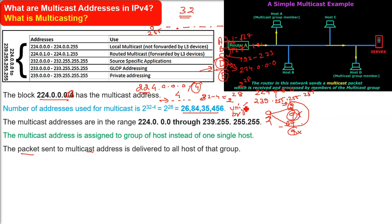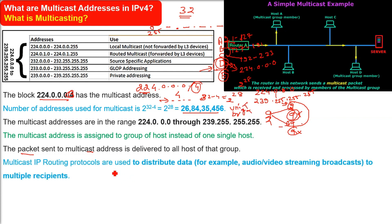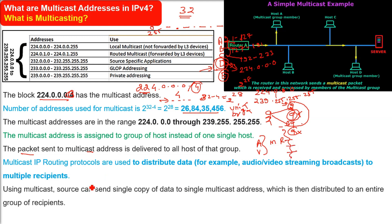The packet sent to a multicast address is delivered to all hosts of that group. Multicast IP routing protocols are used to distribute data — for example, audio and video streaming to multiple recipients. Think of how you watch the IPL or FIFA World Cup broadcast. The source sends a single copy of data to a single multicast address, which is then distributed to the entire group. Multicasting is UDP-based.